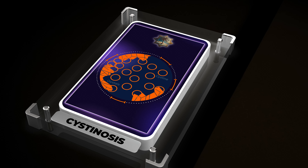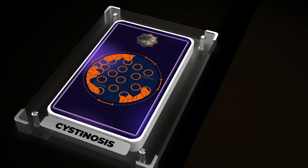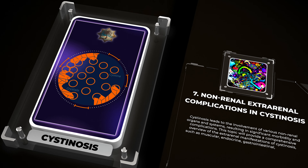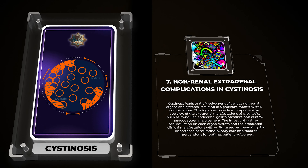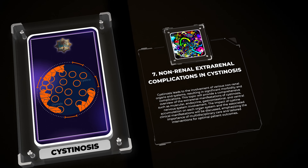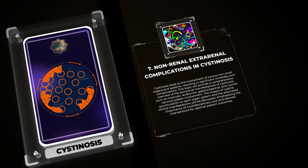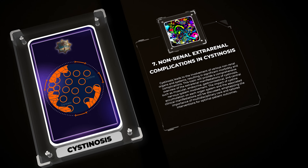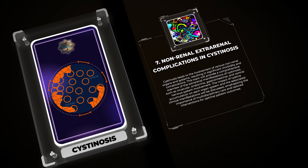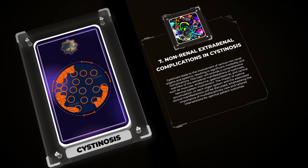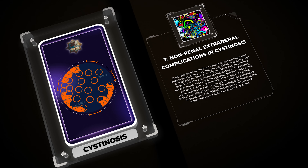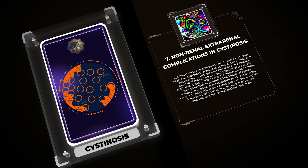Cystenosis leads to the involvement of various non-renal organs and systems, resulting in significant morbidity and complications. This topic will provide a comprehensive overview of the extrarenal manifestations of Cystenosis, such as muscular, endocrine, gastrointestinal, and central nervous system involvement. The impact of cysteine accumulation on each organ system and the associated clinical manifestations will be discussed, emphasizing the importance of multidisciplinary care and tailored interventions for optimal patient outcomes.